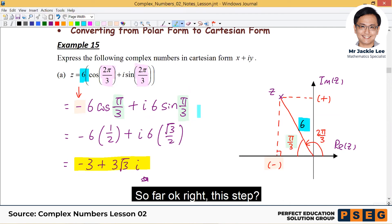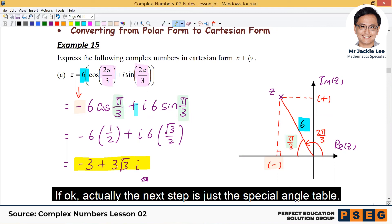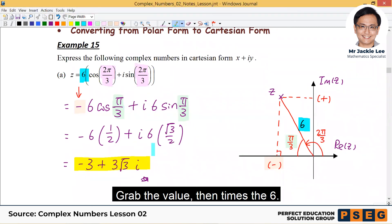So far ok, right? This step, from here to here. If ok, actually the next step actually is just a special angle table. Grab the value. Then times the 6. The 6 can come in times the 6. From there, then we simplify.